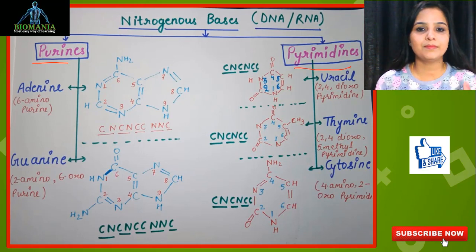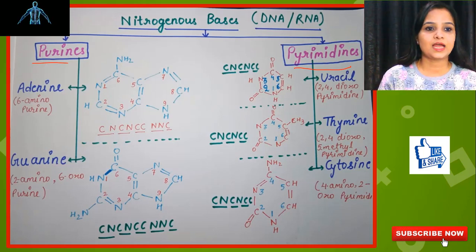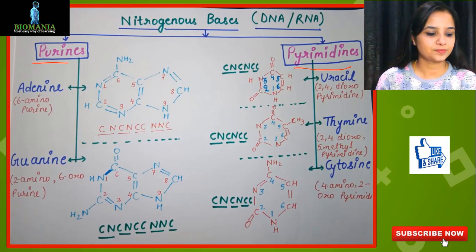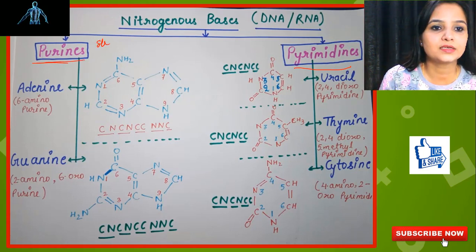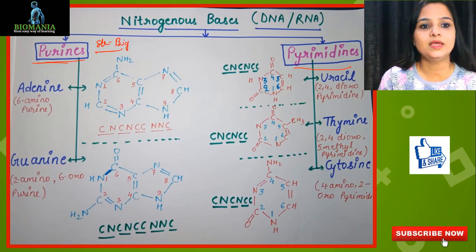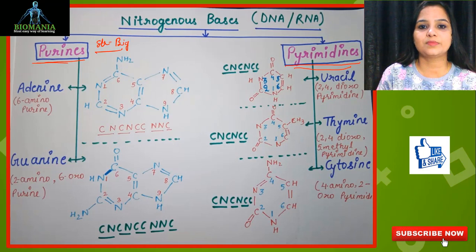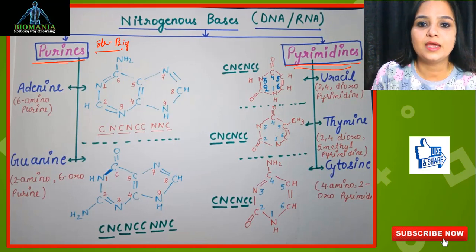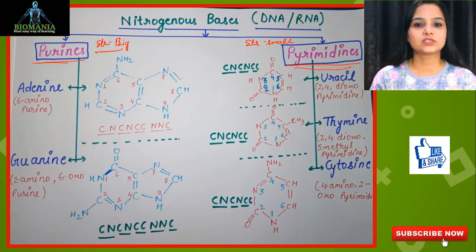How will you remember which has the biggest structure and which has the smallest? It's simple: purine is a small name but has a big structure — vice versa. In the case of pyrimidines, it is a big name — you can see the long spelling — so the structure is small. Again, vice versa. So: big name, small structure; small name, big structure.